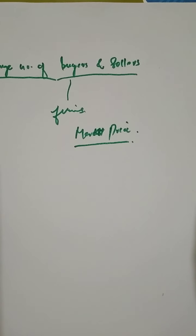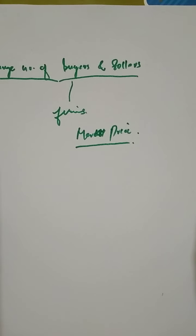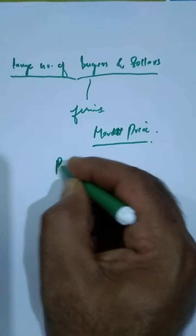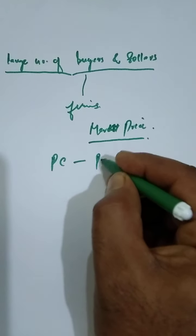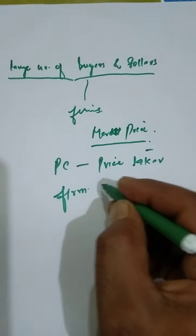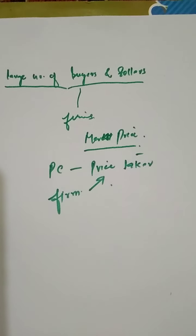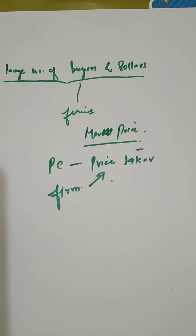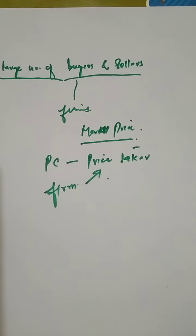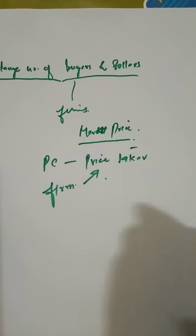The number of firms is so large that any increase or decrease in the supply of one particular firm hardly influences the total market supply. Accordingly, any individual firm fails to make any influence on the price of the commodity. It has to sell at the price which is set by the industry.